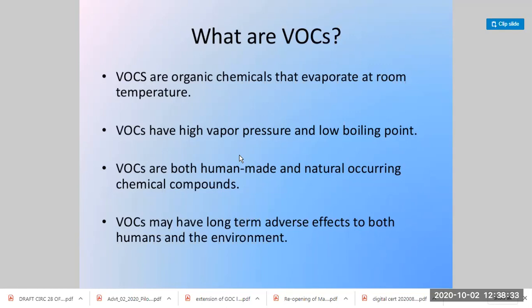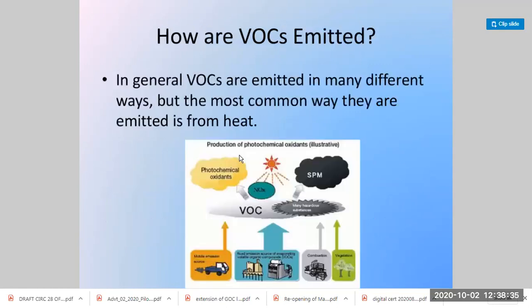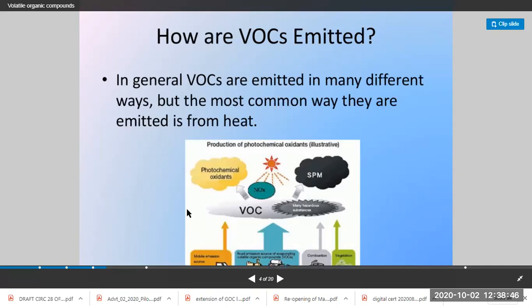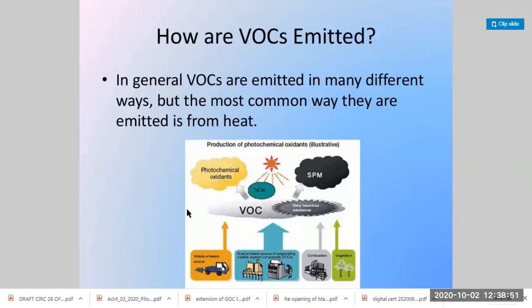These are examples of how VOCs are generally emitted — mostly through heat. They are emitted through burning, exhaust from vehicles, trucks, and machinery, refineries, and fuel combustion from engines. Some vegetation also produces volatile organic compounds, which in the presence of sunlight react and result in smog and many other substances.